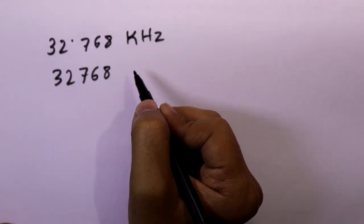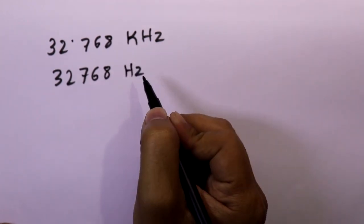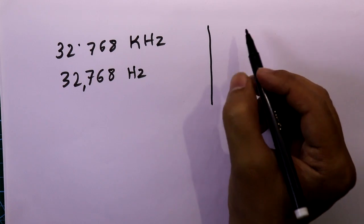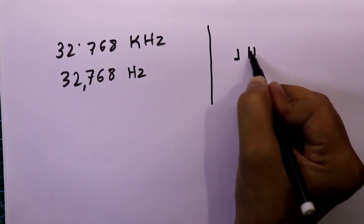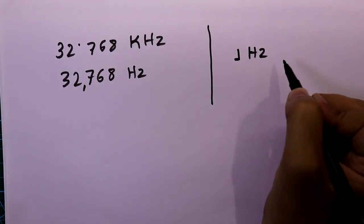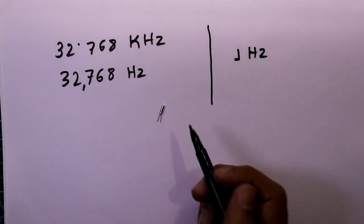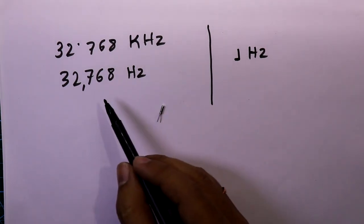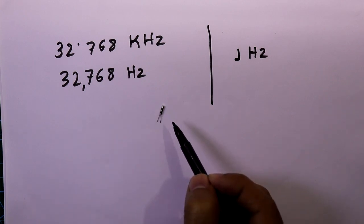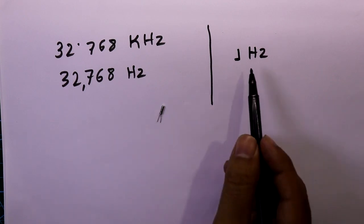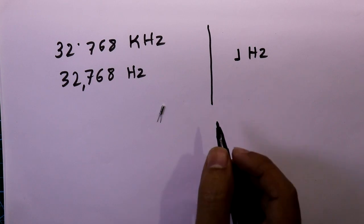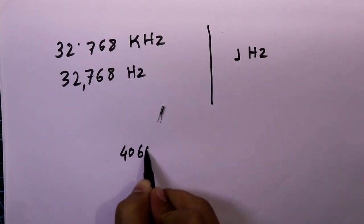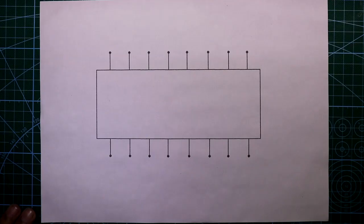Our aim is to get a 1 Hz clock frequency, so we will divide the crystal frequency of 32,768 Hz with a frequency divider to get 1 Hz. The frequency divider IC I am going to use is the IC 4060.